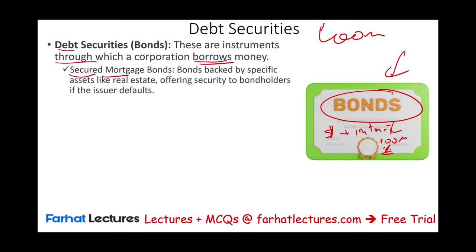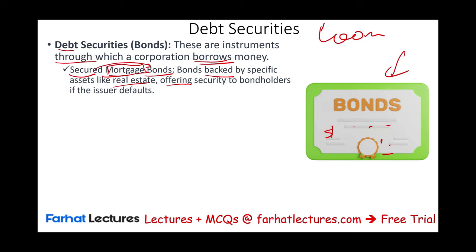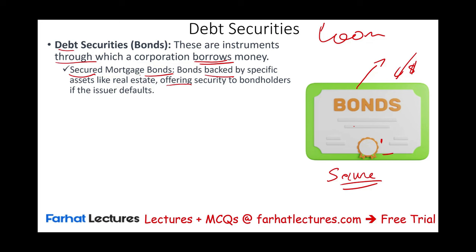One type is the secured mortgage bond. Those bonds are backed by specific assets like real estate, inventory, a warehouse, a building, or a piece of land, offering security to bondholders if the issuer defaults. Basically, if we cannot pay you back, we would sell the real estate or whatever collateral we have and give you back the money. This means if you have a secured bond, you will pay a lower interest rate.